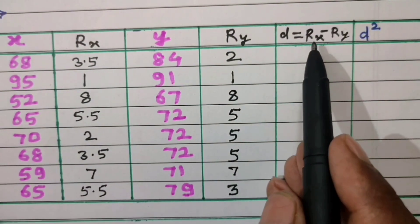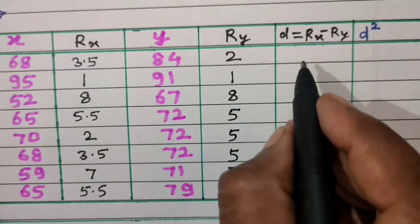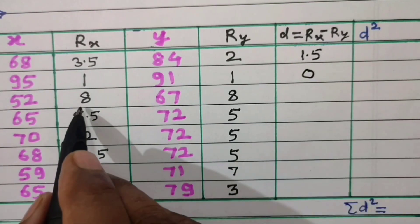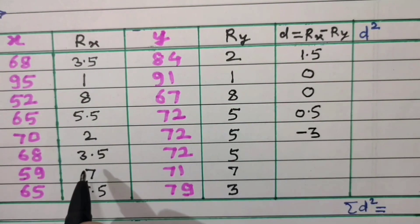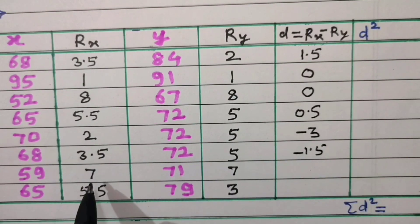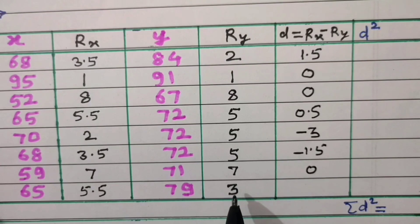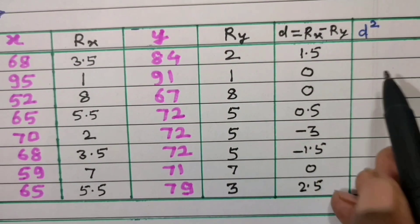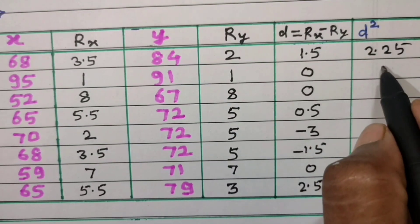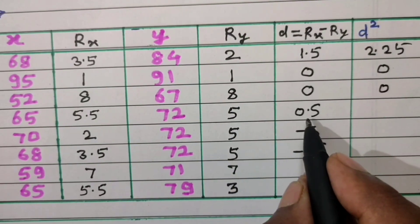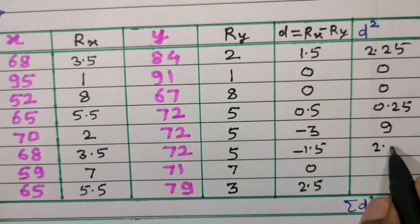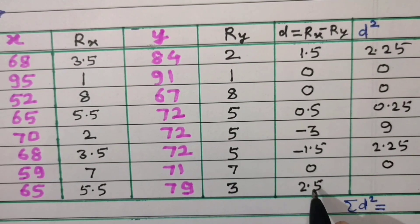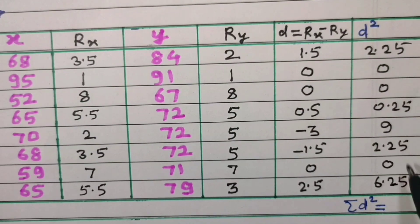Now d = Rx − Ry: 3.5−2=1.5, 1−1=0, 8−8=0, 5.5−5=0.5, 2−5=−3, 3.5−5=−1.5, 7−7=0, 5.5−3=2.5. Then d² values: 2.25, 0, 0, 0.25, 9, 2.25, 0, 6.25. Summation d² = 20.